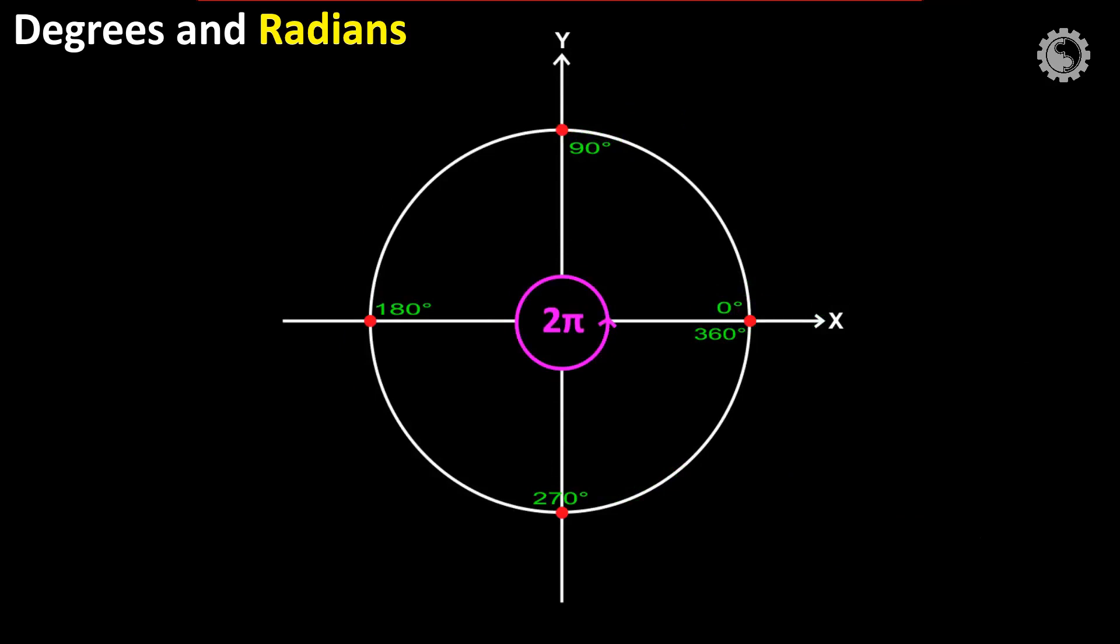So, the half of the circle is π radians. Another half is π, and another half is π divided by 2. Similarly, all the radians are generated.